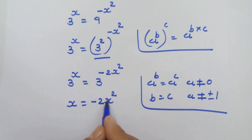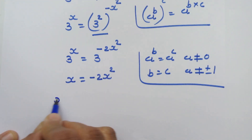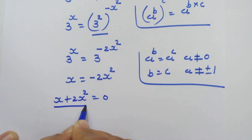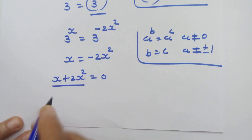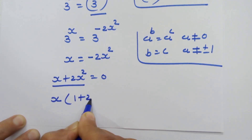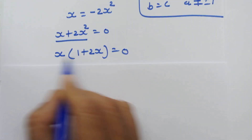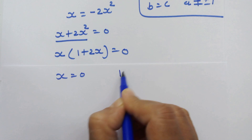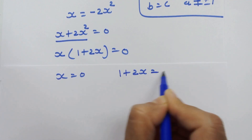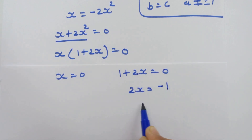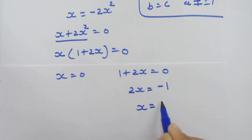Let's move minus 2x square to the left hand side. So x plus 2x square is equal to 0. Let's take x common from here: x into 1 plus 2x is equal to 0. Now two possibilities: x is equal to 0, and 1 plus 2x is equal to 0. Moving 1 to the right hand side gives 2x is equal to minus 1, so x is equal to minus 1 upon 2.